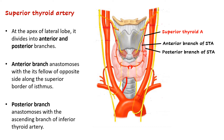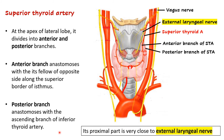The posterior branch runs along the posterior border and anastomoses with the ascending branch of the inferior thyroid artery. One relation is very important: the external laryngeal nerve. The vagus nerve gives a branch — the superior laryngeal nerve — which divides into internal and external laryngeal nerves. The external laryngeal nerve is very close to the superior thyroid artery in its proximal part, but when the artery reaches the apex of the thyroid gland, the nerve deviates and is slightly away from the artery.